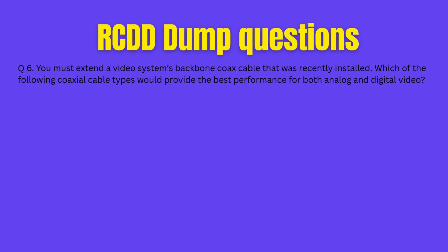Question 6. You must extend a video systems backbone coax cable that was recently installed. Which of the following coaxial cable types would provide the best performance for both analog and digital video? A. Series 6. B. Series 11. C. RG-16. D. RG-59. Take your 20 seconds and lock your answer.